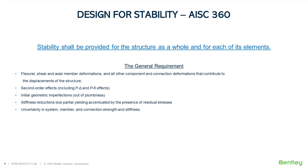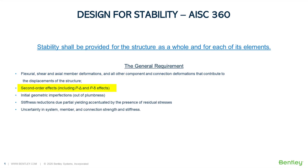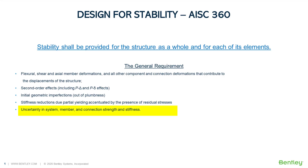The general criteria covers concerns affecting both system or frame stability and member stability. These are considered while determining the required strength and the capacity limit state. The basic general requirements include flexural, shear, axial, member deformation, and all other component and connection deformations contributing to the displacement of the structure. Second-order effects including P-large-delta and P-small-delta must be considered, along with initial geometric imperfections like out-of-plumbness or member out-of-straightness.